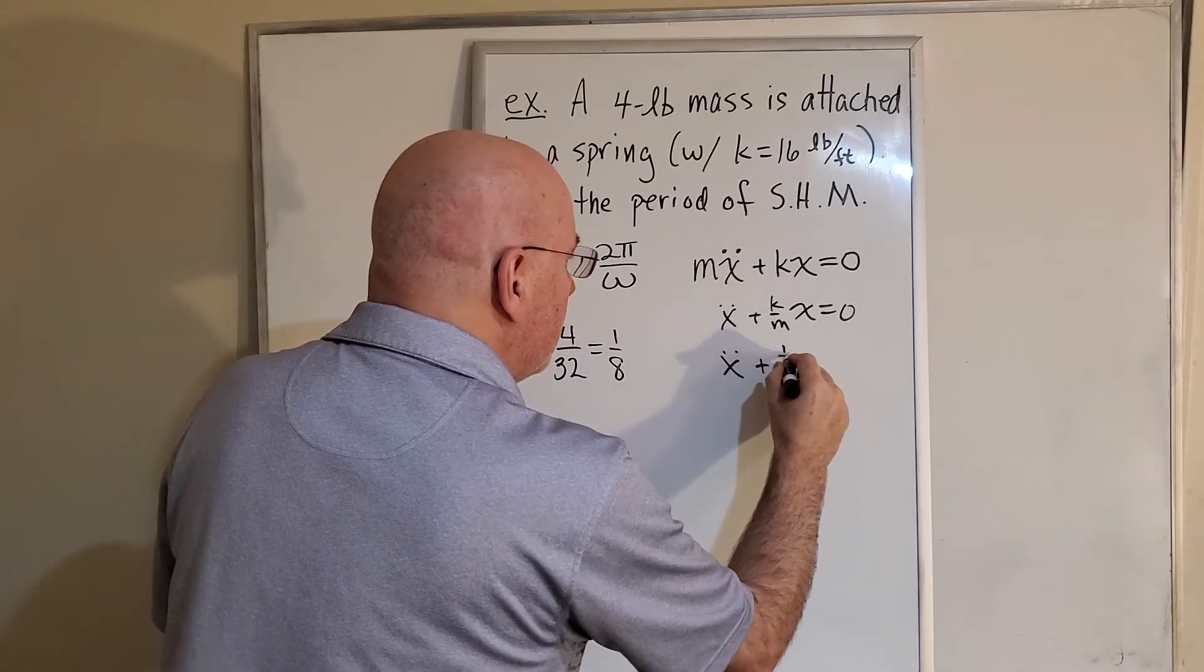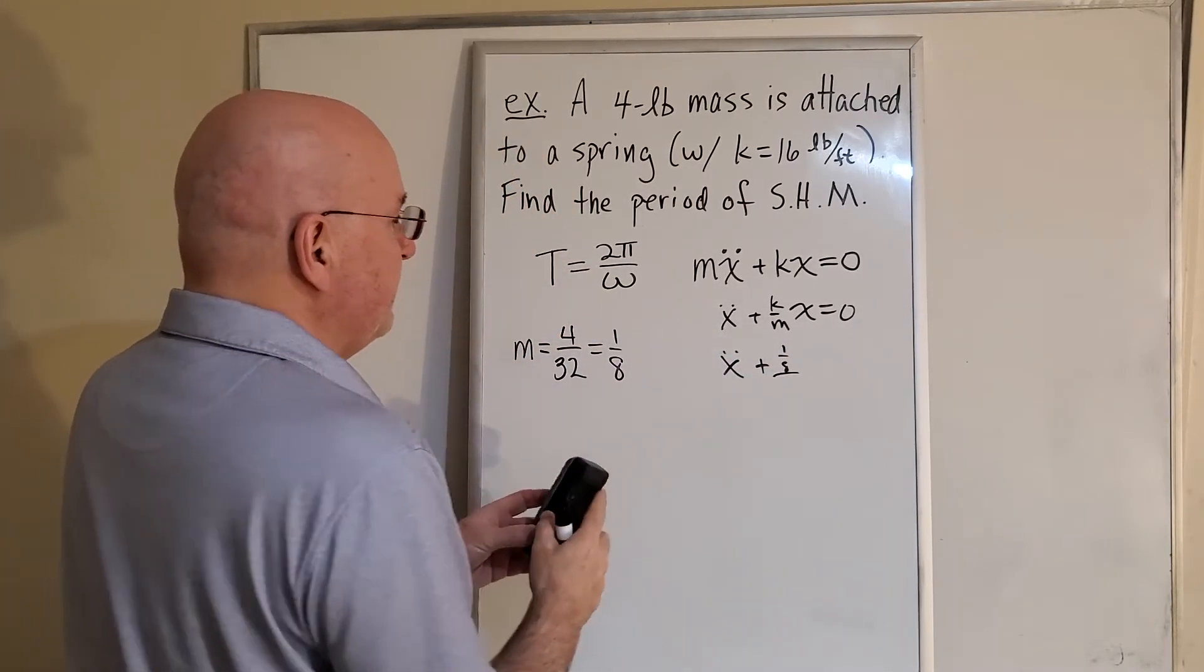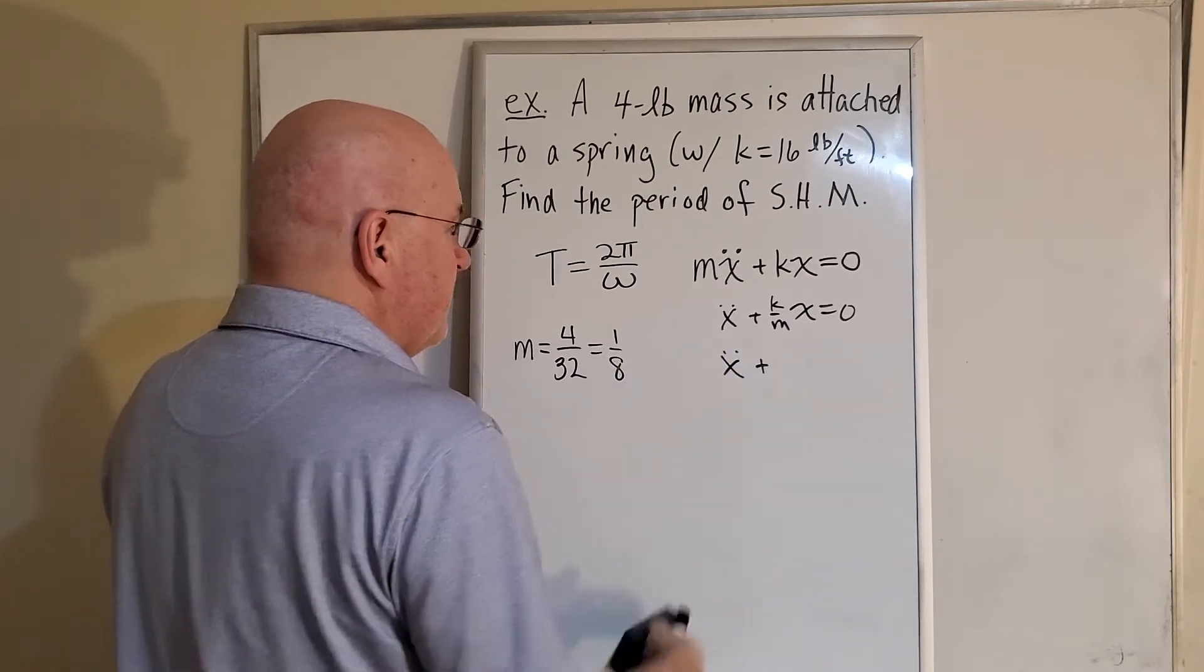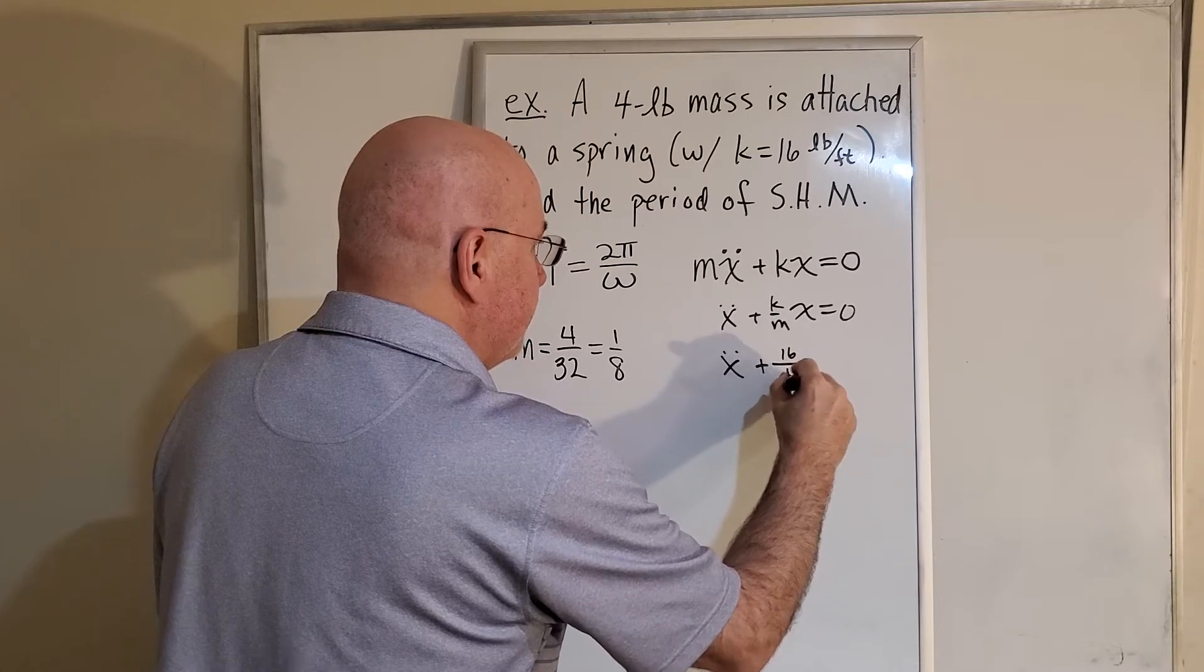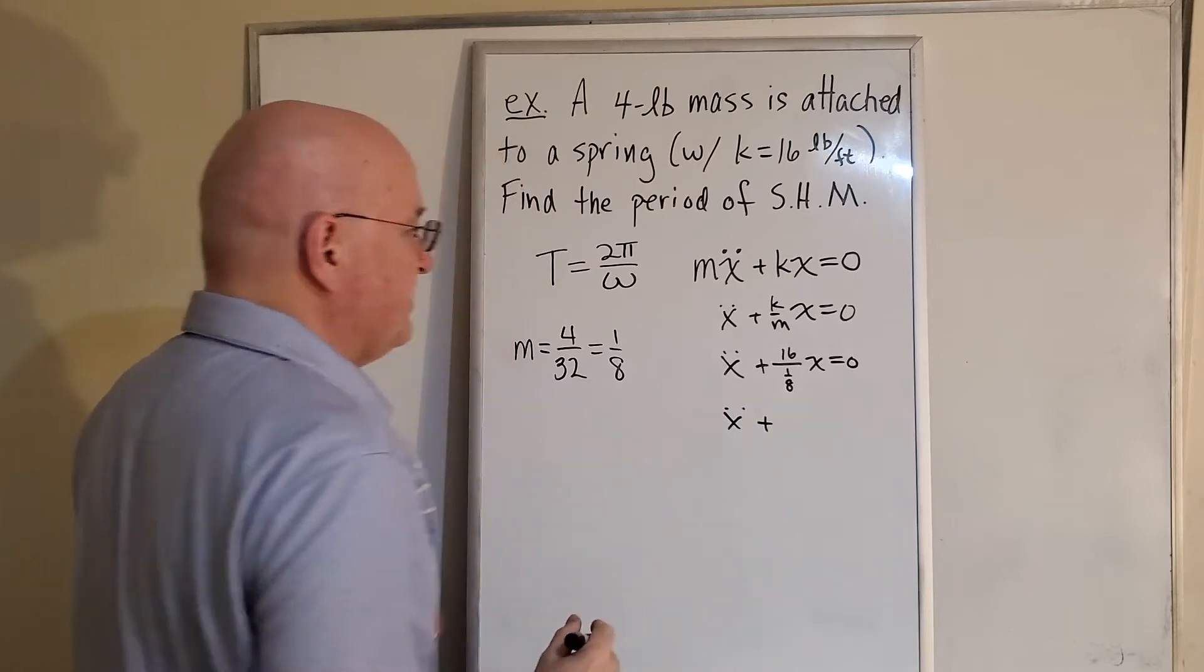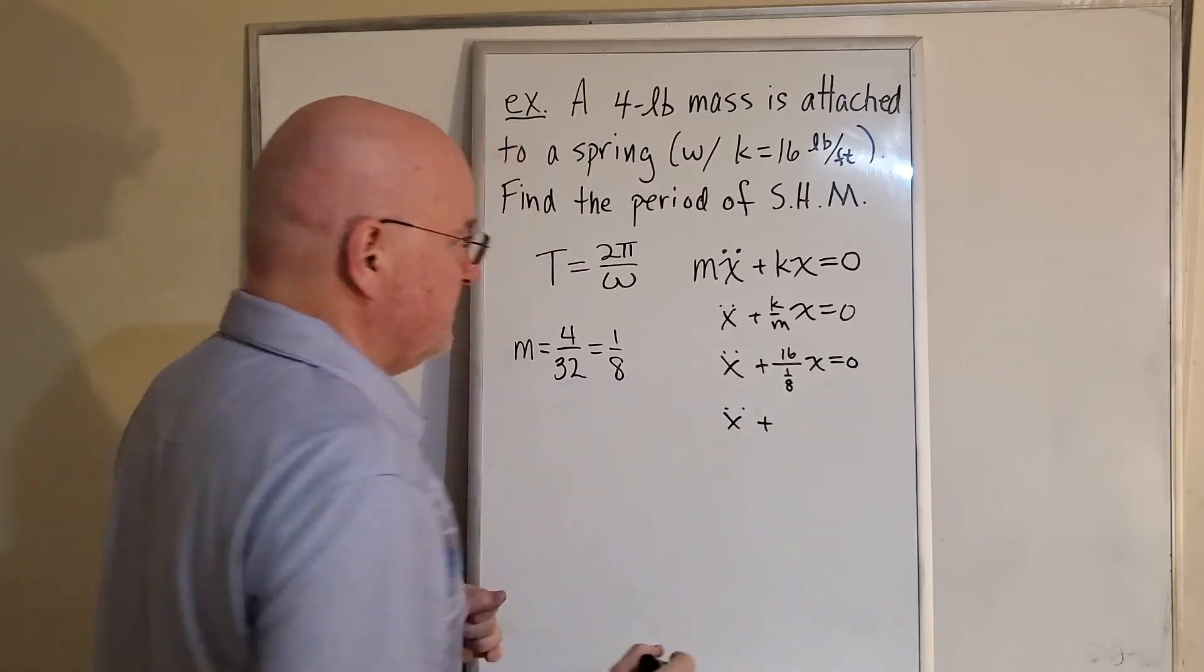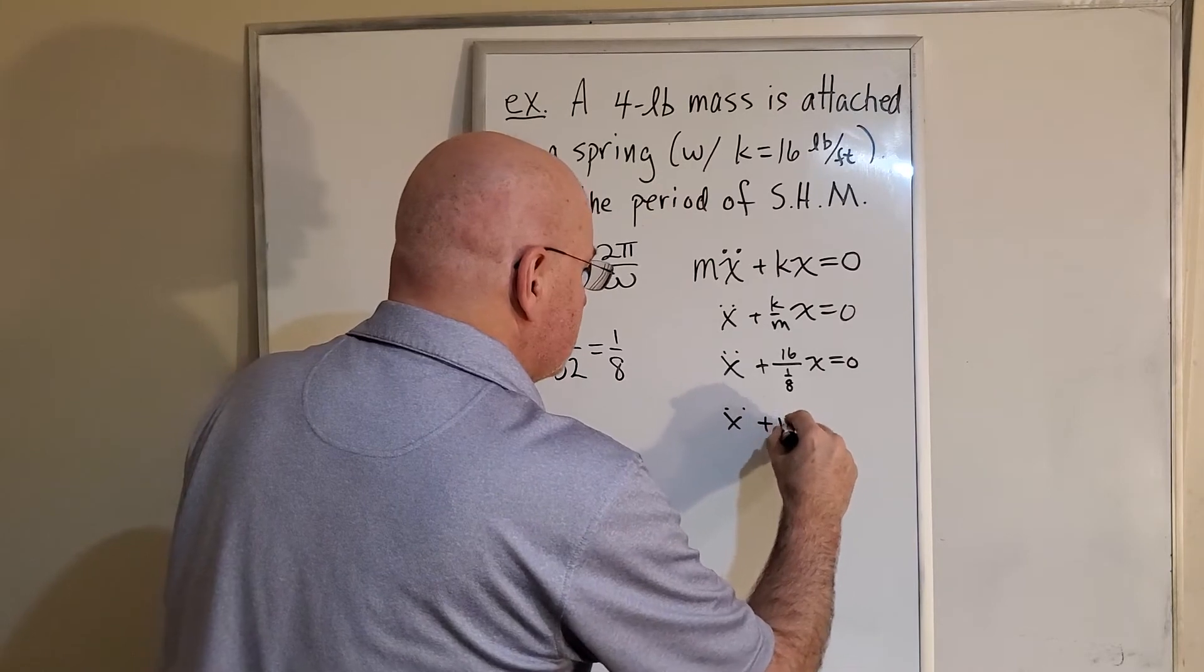We have 1/8 over—oh sorry, k goes on top. So we get 16 over 1/8, which is 16 times 8, which is 128.